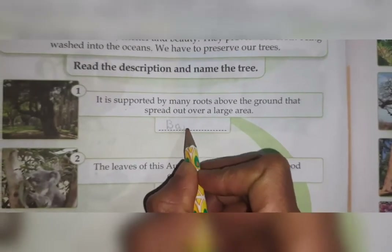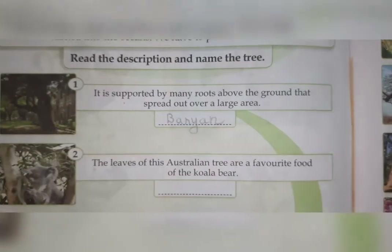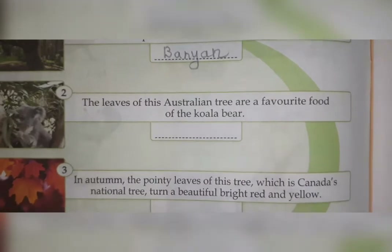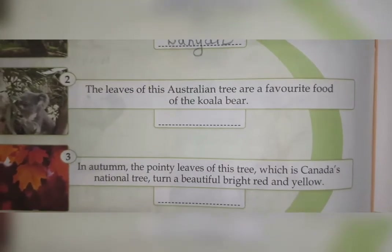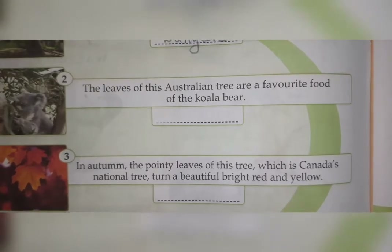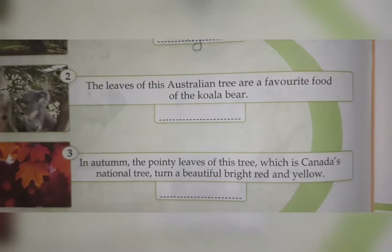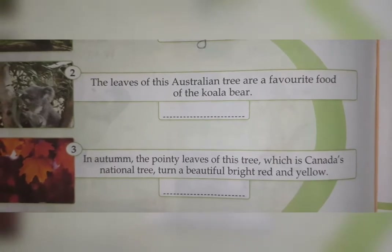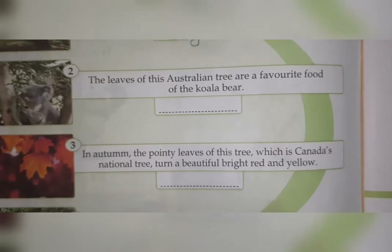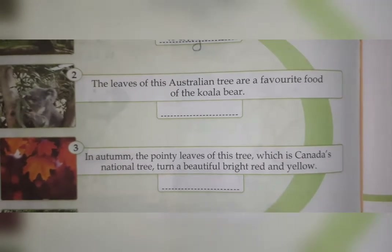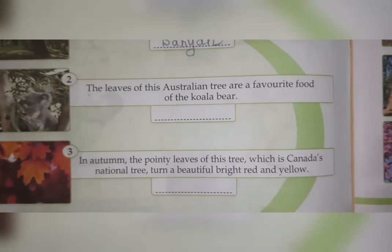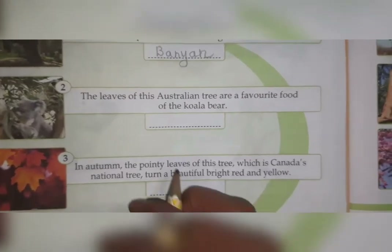Next one: 'The leaves of this Australian tree are a favorite food of the koala bear.' This is an Australian tree but we can find it in India also. The leaves of this tree are the koala bear's favorite food. So this tree is called eucalyptus.